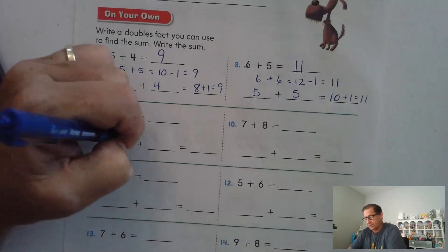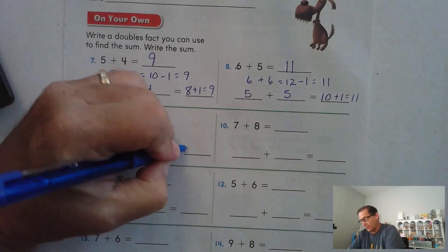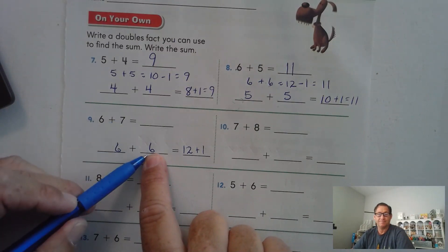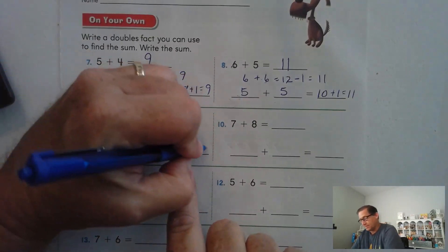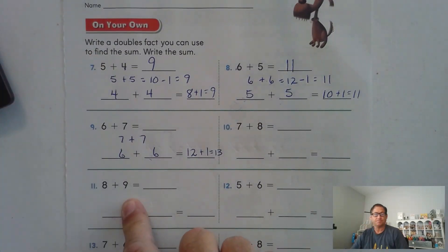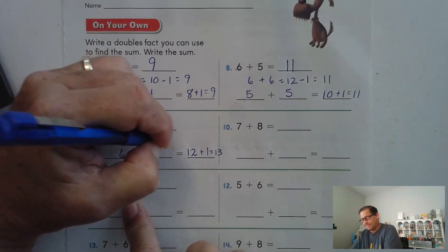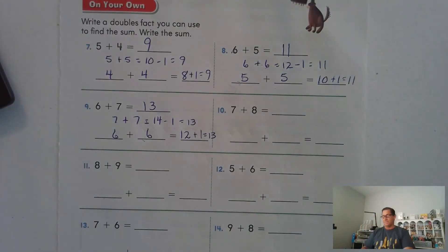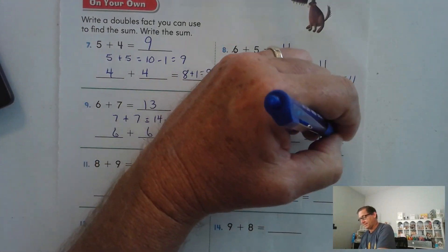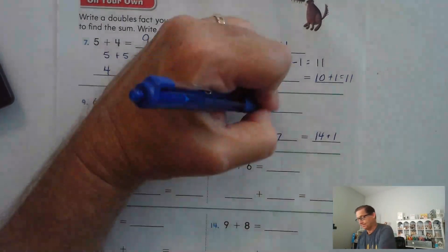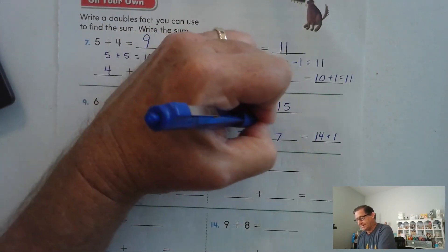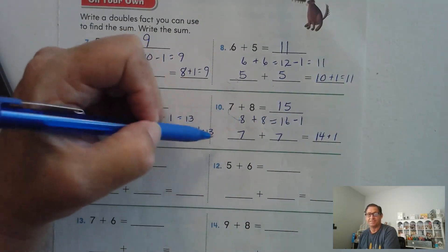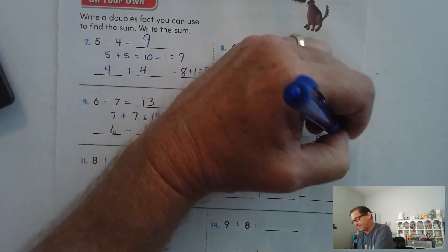6 plus 7: 6 plus 6 is 12, plus 1. We have to account for the fact that we subtracted 1 from the 7 to make it a double 6. Or I can do 7 plus 7, which is 14, minus the 1. For 7 plus 8: 7 plus 7 is 14 plus the extra 1. Or I could do 8 plus 8, which is 16, and subtract the 1 that I changed the 7 to an 8 from — still getting 15.